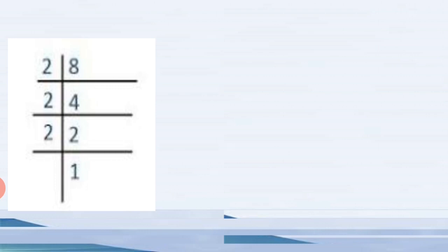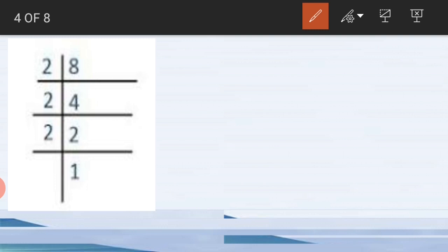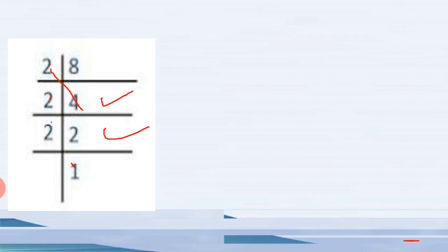First we have to find out the prime factors of eight. We start from the smallest prime number because we are doing the prime factorization method — the number should be prime, not composite. Eight is a multiple of two, so it is divided by two: two fours are eight. Now we have four, which is divided by two: two twos are four. Now we have two: two ones are two.